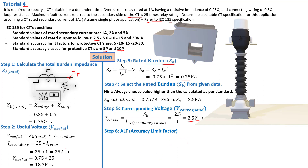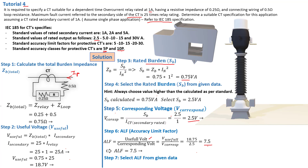Step number six: the accuracy limit factor. The accuracy limit factor is given by ALF equals the useful voltage divided by the corresponding voltage: 18.75 divided by 2.5. You can now see why we calculated the useful voltage — it is used to calculate the ALF, which determines how much current can pass through the CT primary before saturation. We find an ALF of 7.5, which is not a standard value, so we must select the next higher standard value: ALF equals 10.